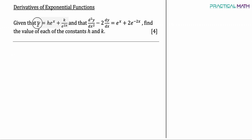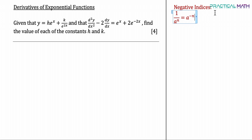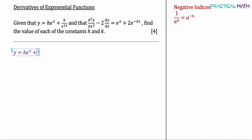In this question, we are given an equation. We know that this is the second order derivative of y, and this is the first order derivative of y, and it involves the exponential function e to the power of x. First, before we dive into the differentiation, we want to convert the fraction into a single line using the negative indices rule. From elementary mathematics, 1 over a to the power of n gives us a to the power of negative n. So y equals he to the power of x plus k over e to the power of 2x can be converted into he to the power of x plus ke to the power of negative 2x.